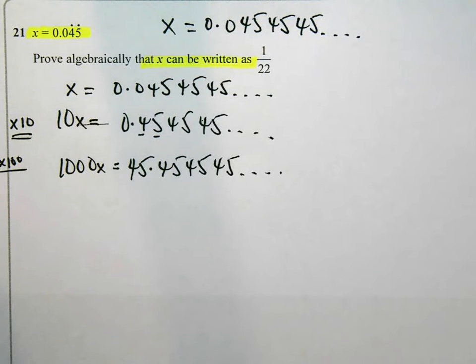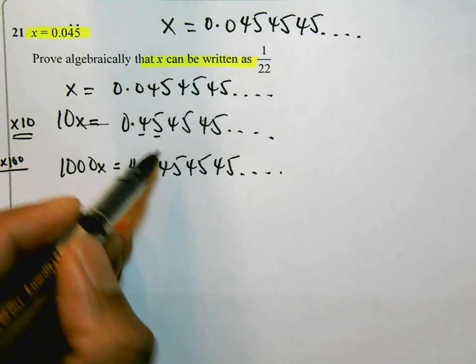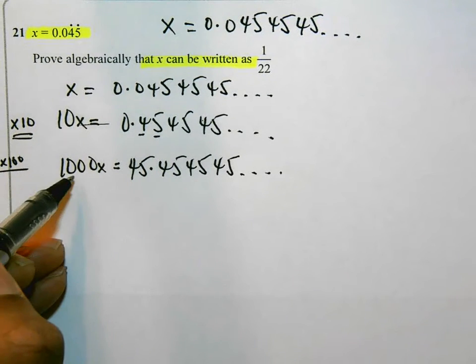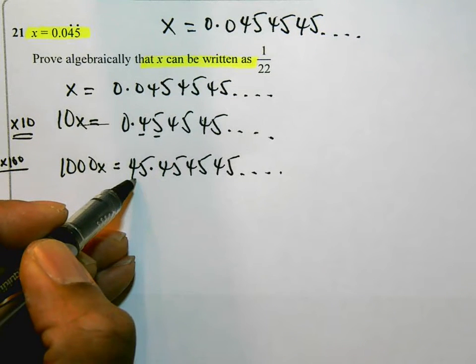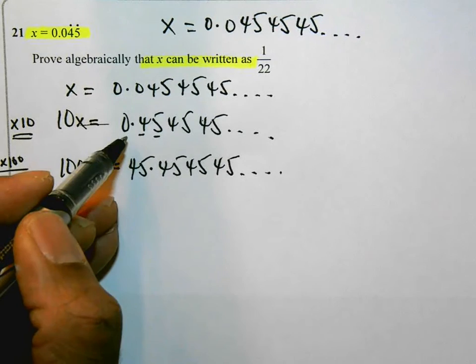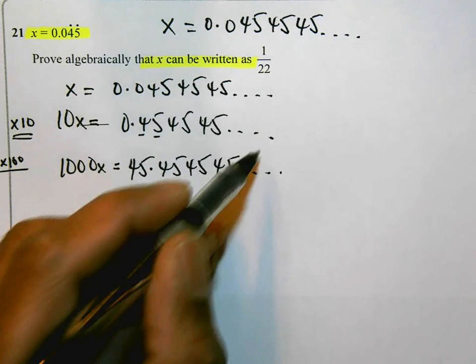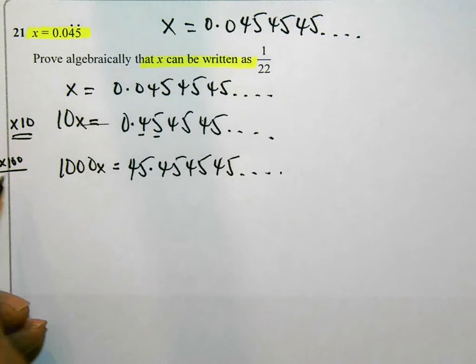So I've got what I actually really need now, because if I do a subtraction, 1000x take away 10x and 45.454545 and so on, take away 0.454545, the decimal parts are going to disappear.